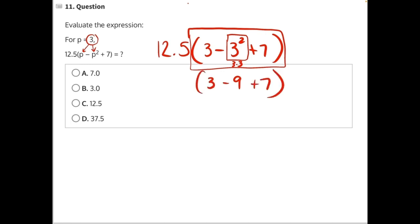And now we can move on to, there's no multiplication or division, so we can do addition and subtraction. From left to right, 3 minus 9 would give us a negative 6 plus 7.